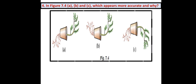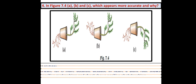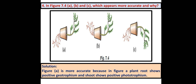Here is another diagram-based question. In figure 7.4, which among A, B and C appears most accurate and why? Observe the diagram carefully. Figure A shows upward growth of the shoot and downward growth of the root. In B, both root and shoot grow upward. In C, both root and shoot grow downward. Figure A is the most accurate one.